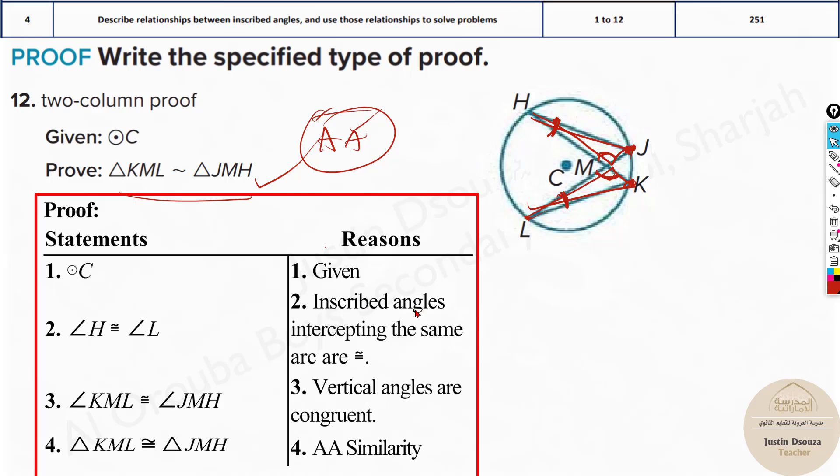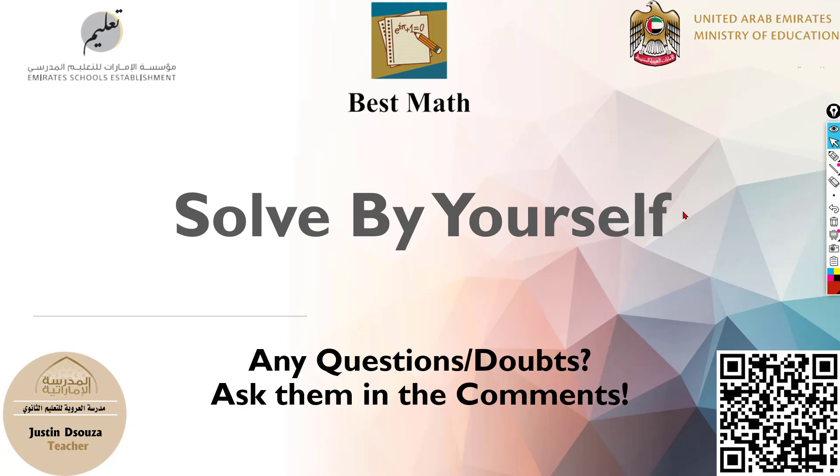So that's what is done over here. They have given us a circle. And inscribed angles have been intercepting the same arc, that is H and L. And we know vertical angles, that is measure of angle M from K, M, L, and J, M, H. And therefore, from AA similarity, we have proved it. Try to remember the concept and the formula of the inscribed angles, and then you can easily solve these problems.